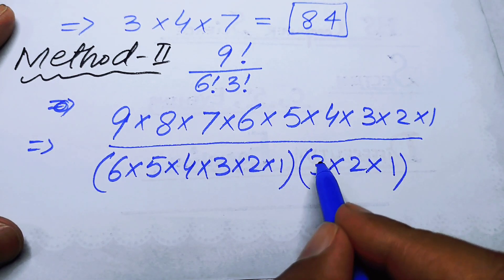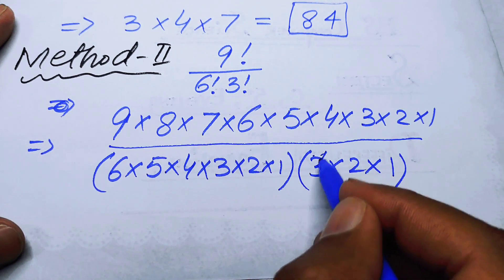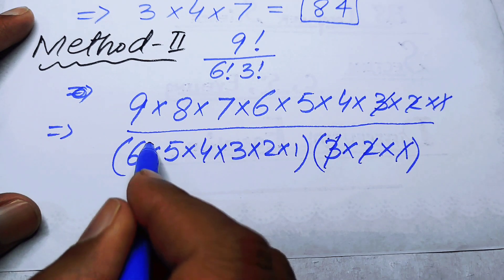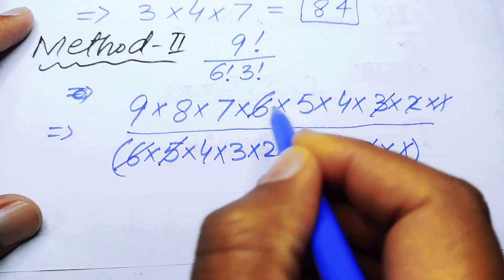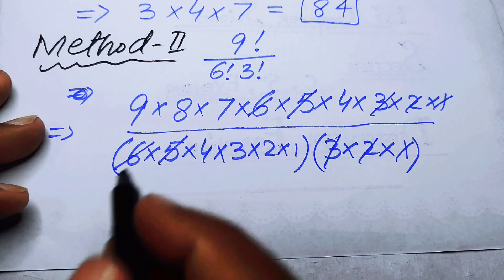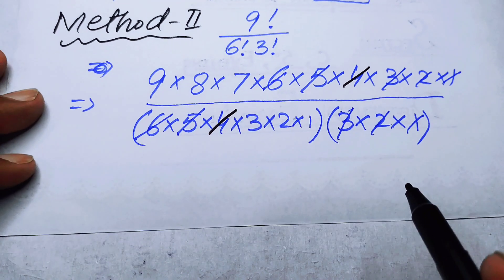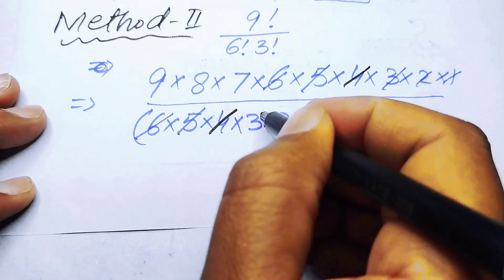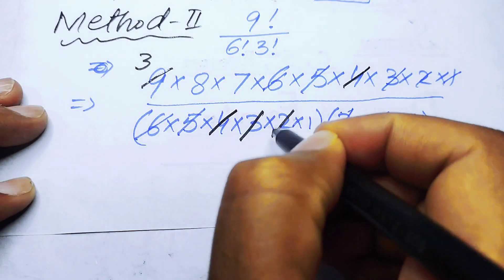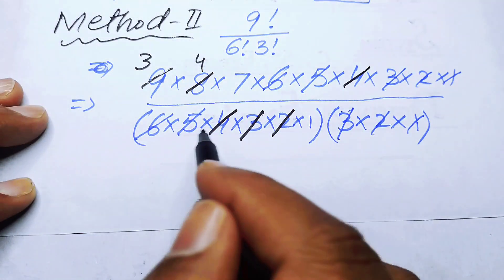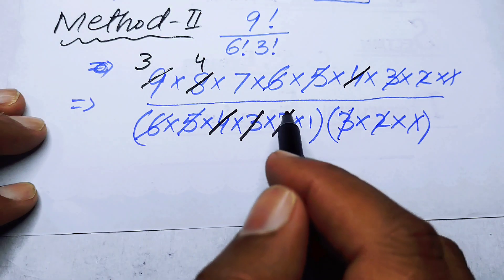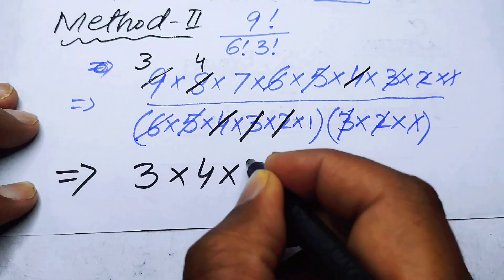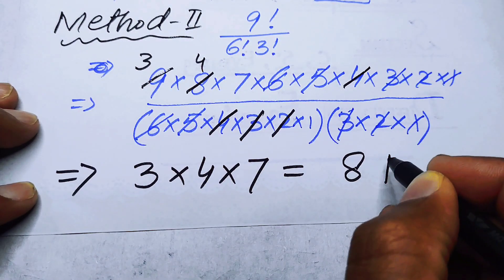Here you can see that three, two, and one from three factorial cancel with those terms in the numerator. Then six, five, and four cancel out as well, so all denominator terms are cancelled by numerator terms. We are left with three multiplied by four multiplied by seven, which equals 84.